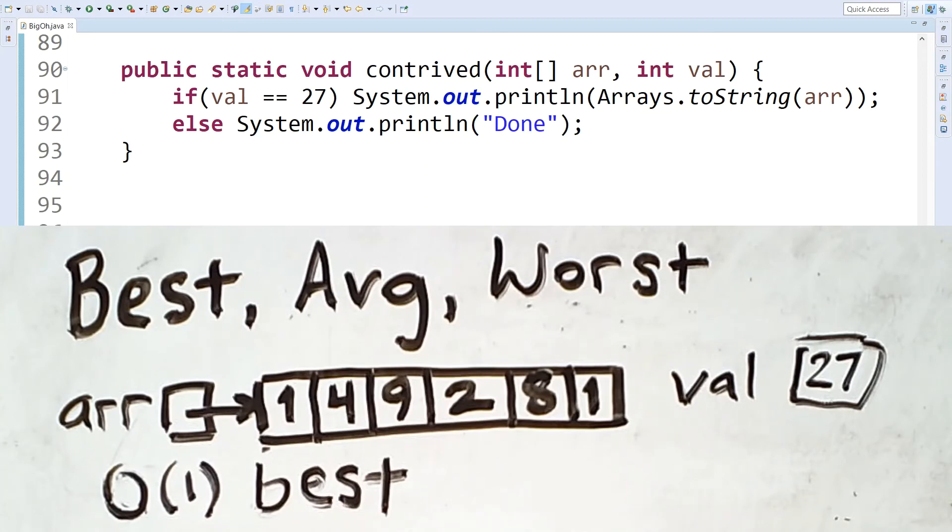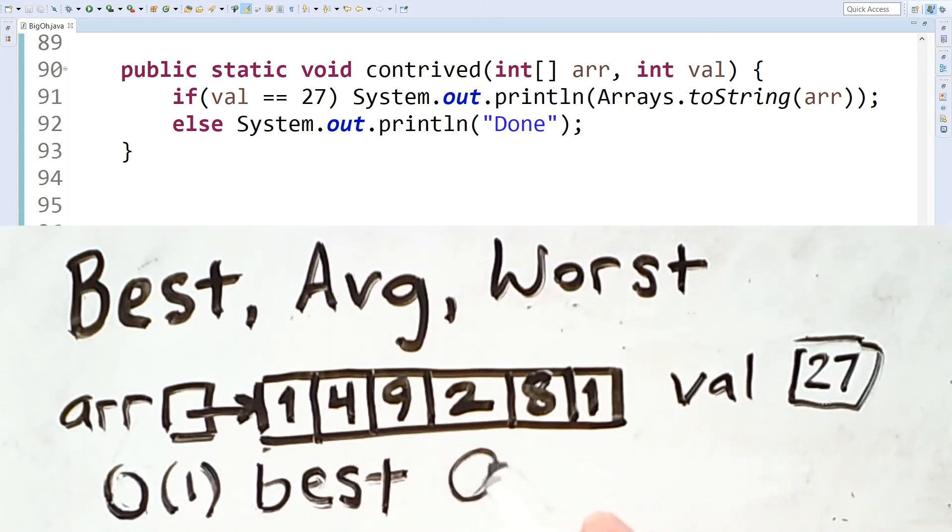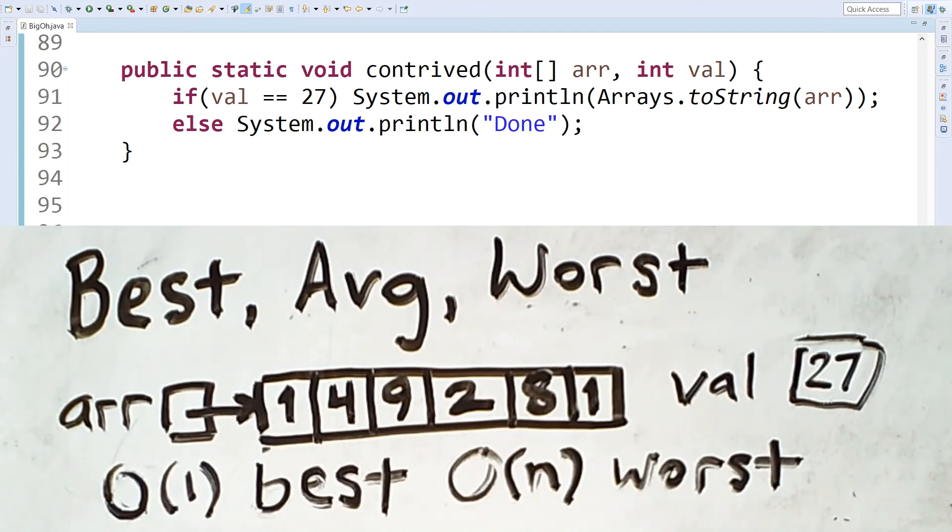So, the arrays.toString method runs in O of n time with respect to the size of the array input. So, in the worst case, we have a runtime of O of n. Note that analyzing this method also depended on the fact that you needed to know what the runtime of a method being called was. Just because something looks like a single statement in your code doesn't mean that it runs in O of n time.